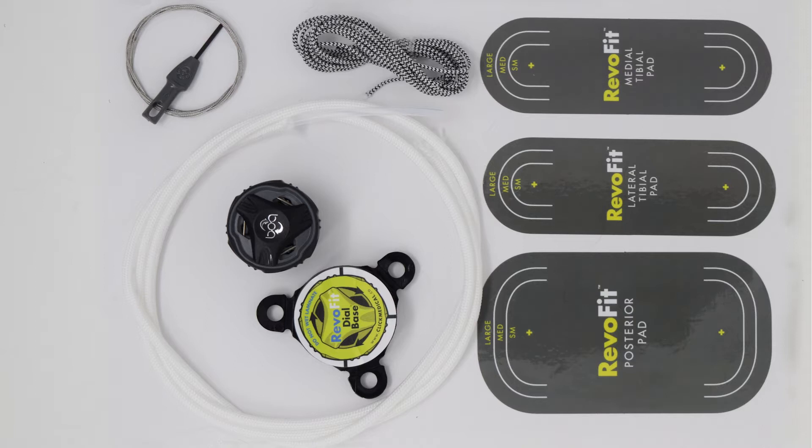In the kit you'll find instructions, a dial base, a dial, lacing, the tubing that houses the lace, a wire lace feeder, and adhesive patterns for outlining the socket pads.